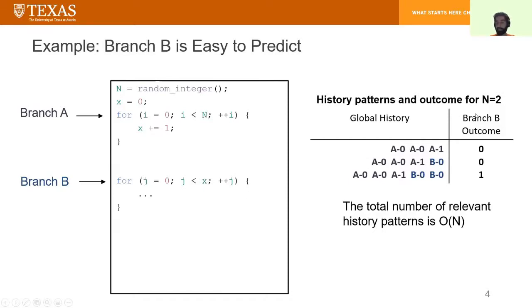The table on the right-hand side lists all the possible history patterns if n is 2. It always includes two iterations of the first loop, a not taken, n not taken, and a taken, which is the exit branch. And then, depending on the number of not taken B's that we see, we can either predict not taken, or when we're ready to exit out of the second loop, we will predict taken. The total number of patterns for any n is order of n. Because of that, this branch, Branch B, is easy to predict for state-of-the-art branch predictors.